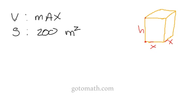So we're going to write the equation or the formula to find the volume. The volume is equal to x times x times h, so that volume ends up being x squared times h.